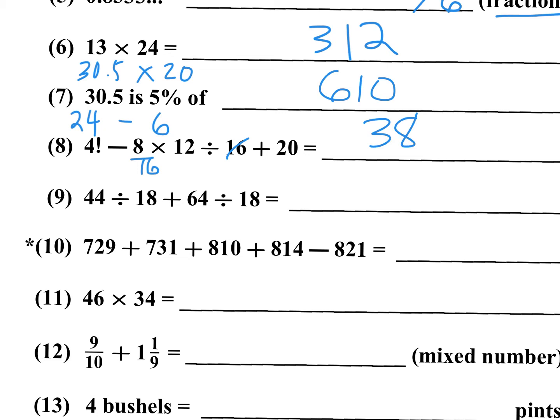Number 9: 44 divided by 18 and 64 divided by 18, then add the results. What I can do is factor out the divided-by-18: I have 64 plus 44, which is 108. Take 108 and divide by 18. For number 9, the answer is 6 — 108 divided by 18 is exactly 6.